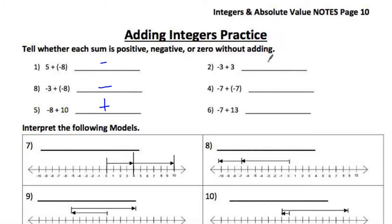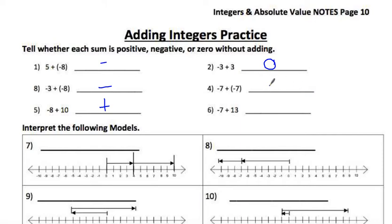Number 4 will be negative. Number 5 will be zero because positive 3 and negative 3 cancel each other. Number 6 will be negative — same signs, just add them together. And the last one will be positive because 13 has a greater absolute value.